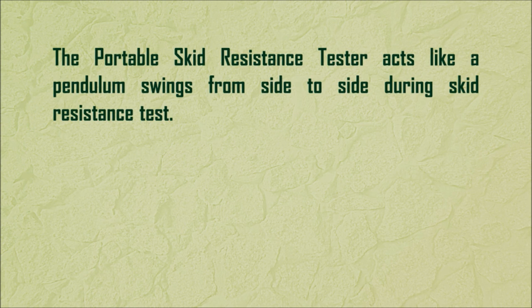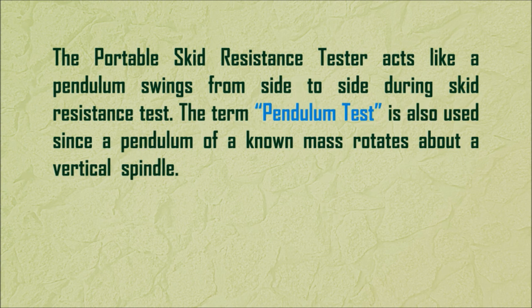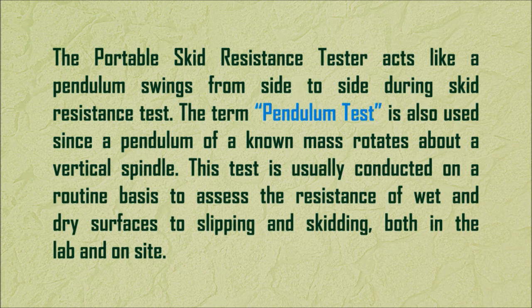The portable skid resistance tester acts like a pendulum, swinging from side to side during the skid resistance test. The term 'pendulum test' is also used since a pendulum of a known mass rotates about a vertical spindle. This test is usually conducted on a routine basis to assess the resistance of wet and dry surfaces to slipping and skidding, both in the lab and on site.